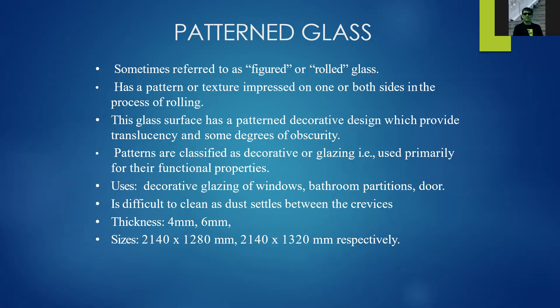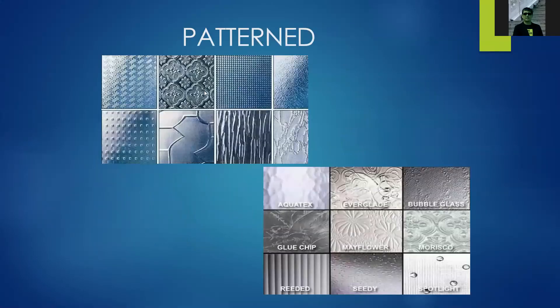Patterned glass, sometimes referred to as figured or rolled glass, has a pattern or texture impressed on one or both sides during the rolling process. It provides translucency and some degree of obscurity. Patterns are classified as decorative or glazing. Uses include decorative glazing of windows, bathroom partitions, and similar applications. One disadvantage is that it is very difficult to clean because of its crevices. Thickness is about 4 to 6 millimeters, with sizes ranging from 2.0 by 1.2 meters to 2.1 by 1.3 meters.